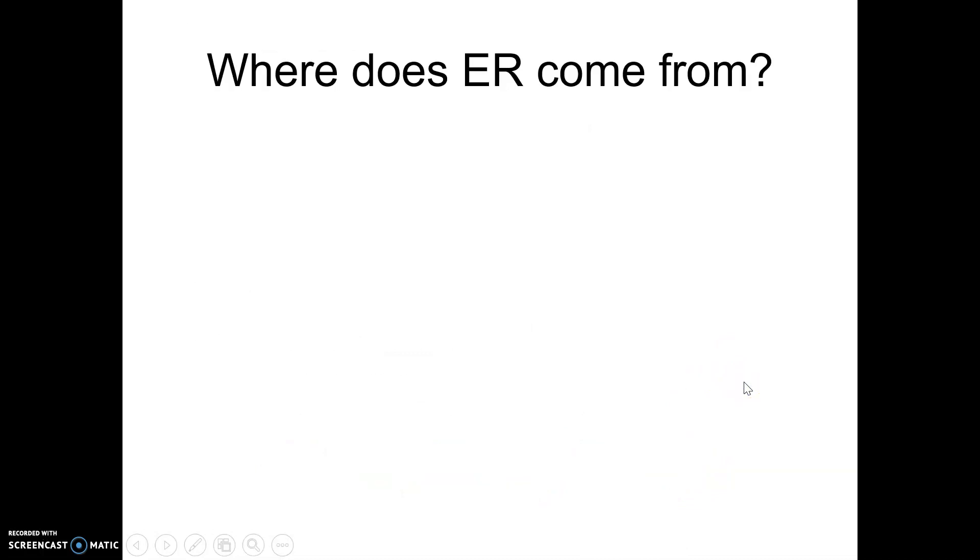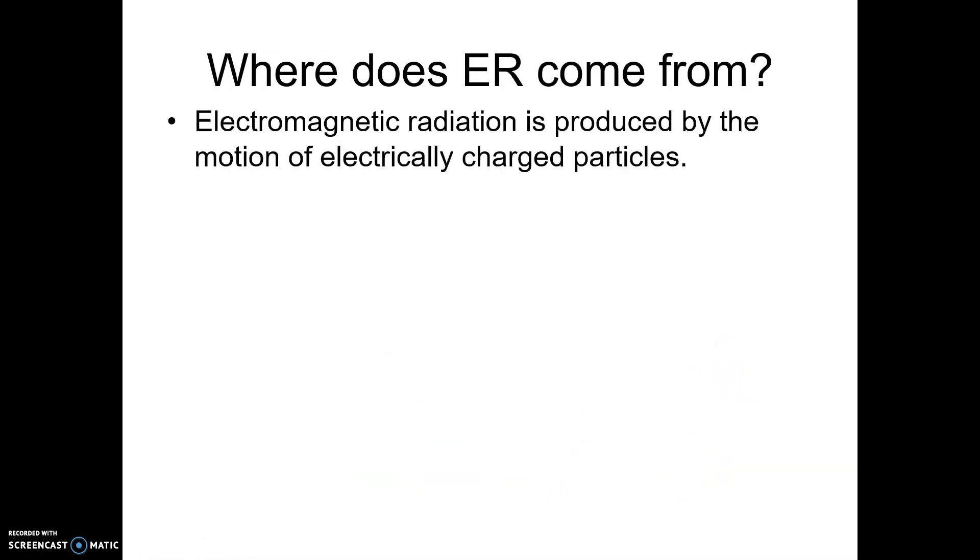So where does electromagnetic radiation come from? It's really a result of moving charged particles. Anything that has charge and is moving has the potential to produce electromagnetic radiation.